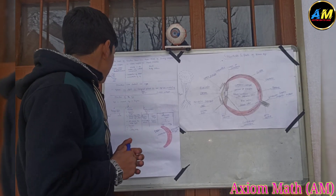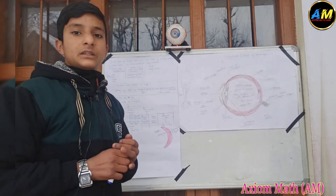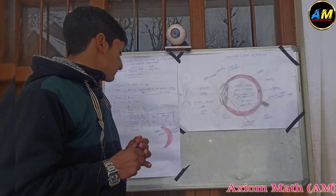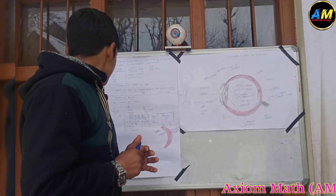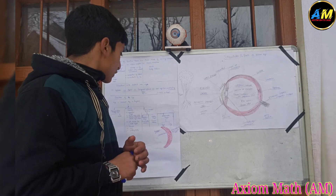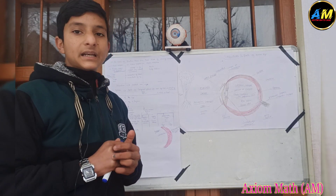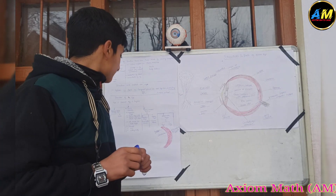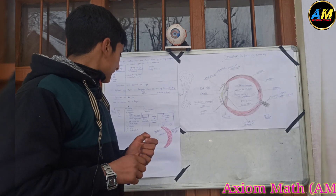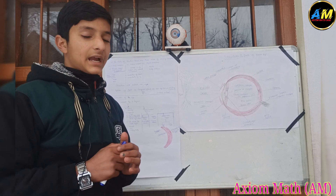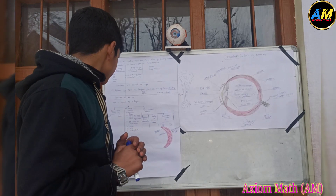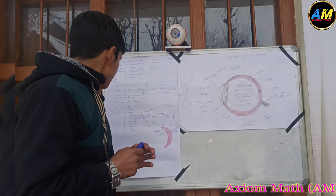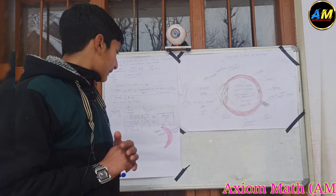The tunica fibrosa is the outermost fibrous layer, which includes the sclera and cornea. The tunica vasculosa provides the retina blood supply and contains melanin pigment, which provides color and absorbs extra light. Its components include the choroid and the ciliary body.